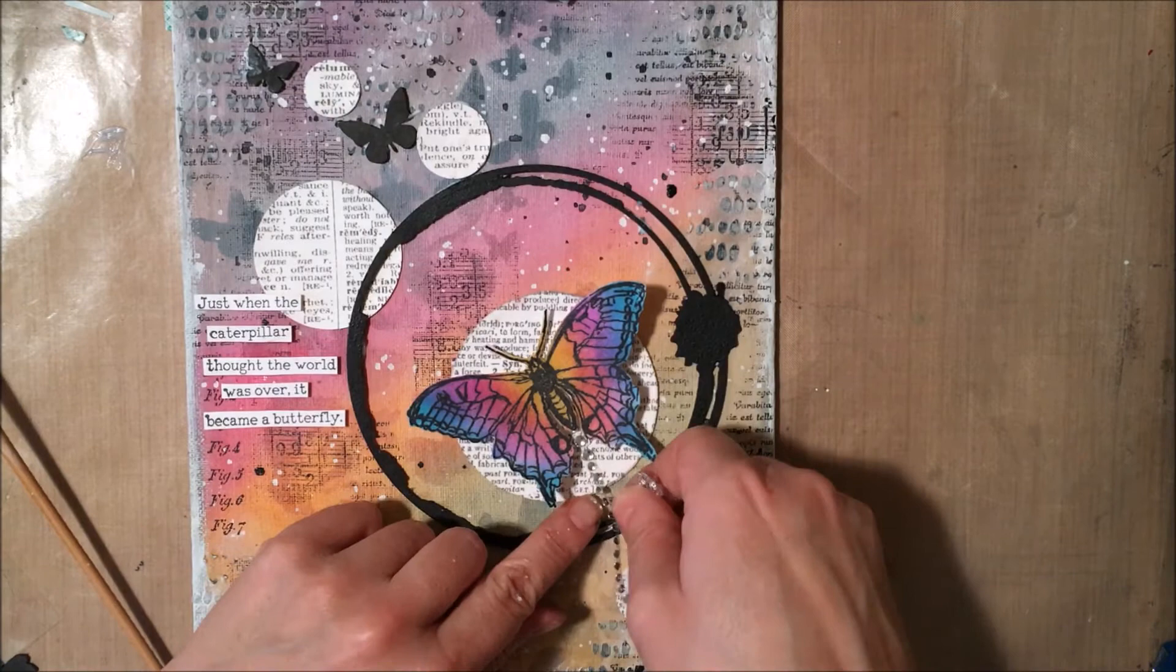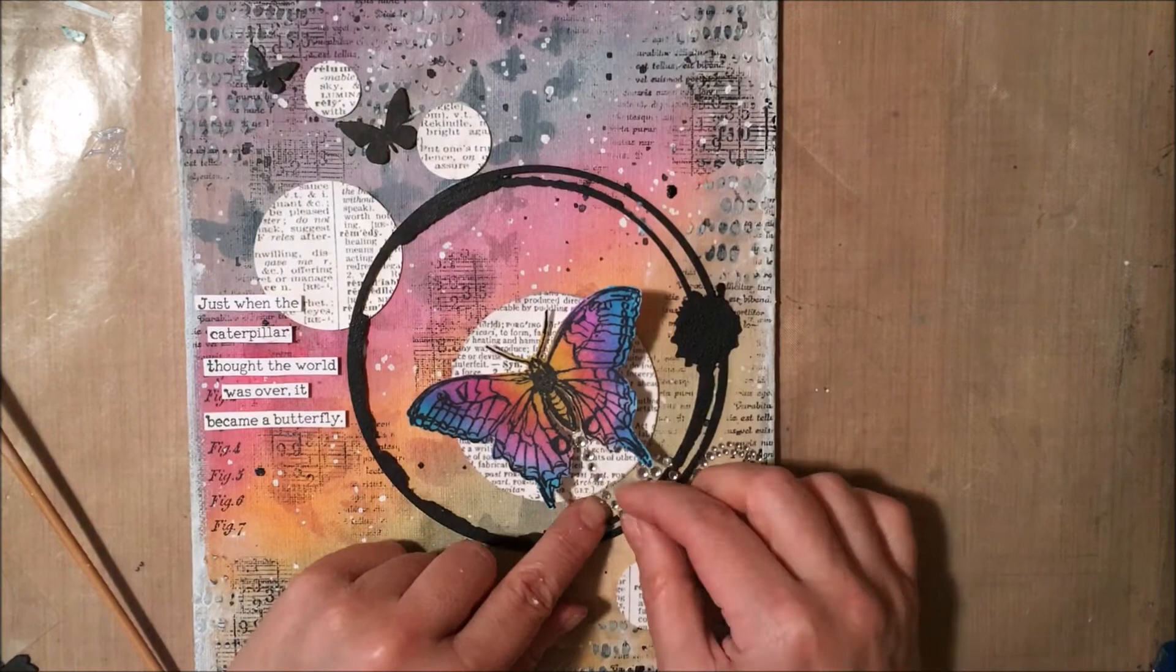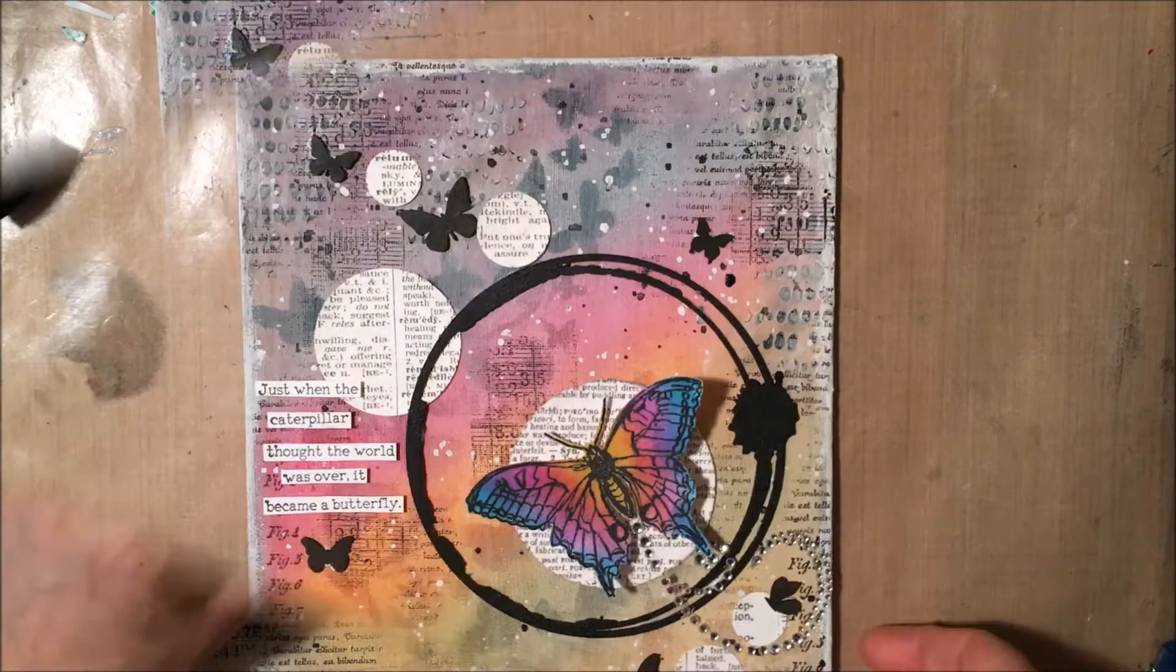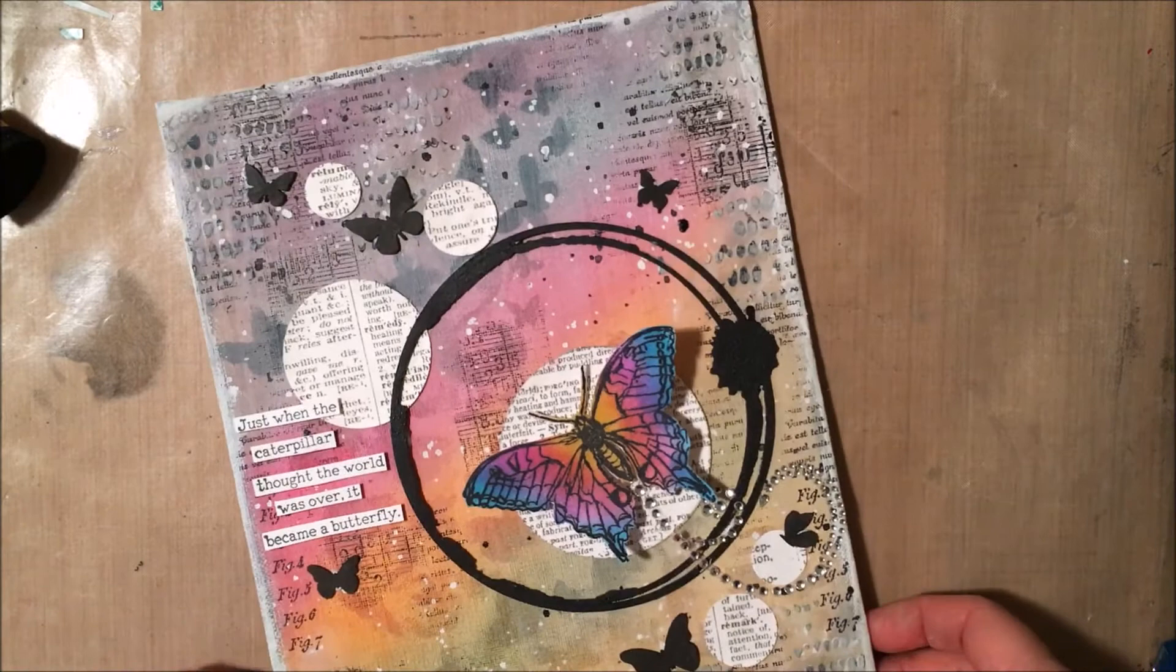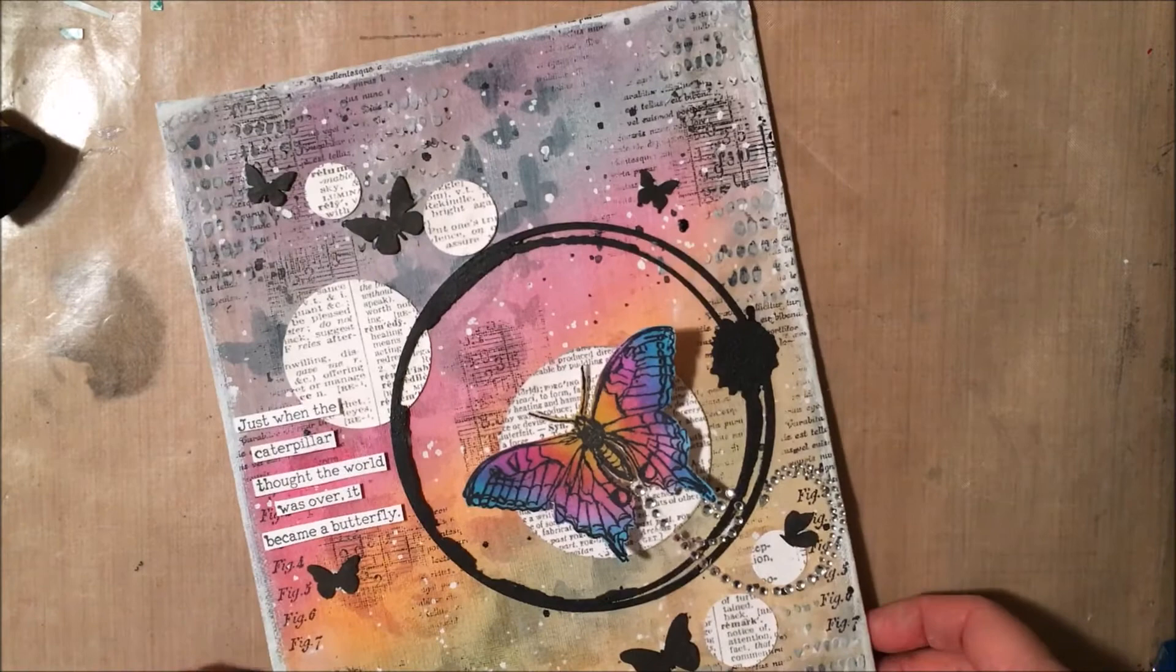And now I'm just adding some little rhinestones to create a little trail for the butterfly. And that is about it for me. Here's the rest of my little butterflies. I hope you enjoyed today's project. Here's a photo close-up of the finished canvas. And you can visit me on my blog or on the Crafters Workshop. Thanks so much. Happy crafting!